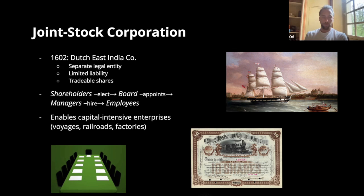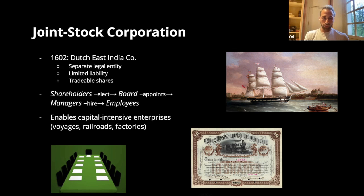Stocks of the Dutch East India Company were tradable. There was the Amsterdam Stock Exchange where investors who bought shares could resell them even before the company turned a profit, if they were uncertain of its future prospects. Here you get the basic archetype of the corporation: shareholders who contribute capital elect a board of directors, which then appoints management, which then hires the employees. This enabled a separation between the ownership of the company and the actual day-to-day management, so you can coordinate more capital and labor to do more capital-intensive enterprises.